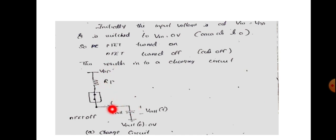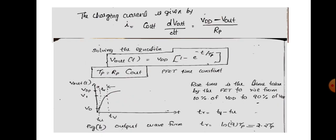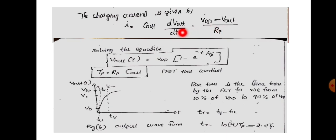The current is voltage divided by resistance. Applying Ohm's law, the current through the PFET resistance is VDD minus V_out divided by R_P. So the current equals (VDD − V_out) / R_P.